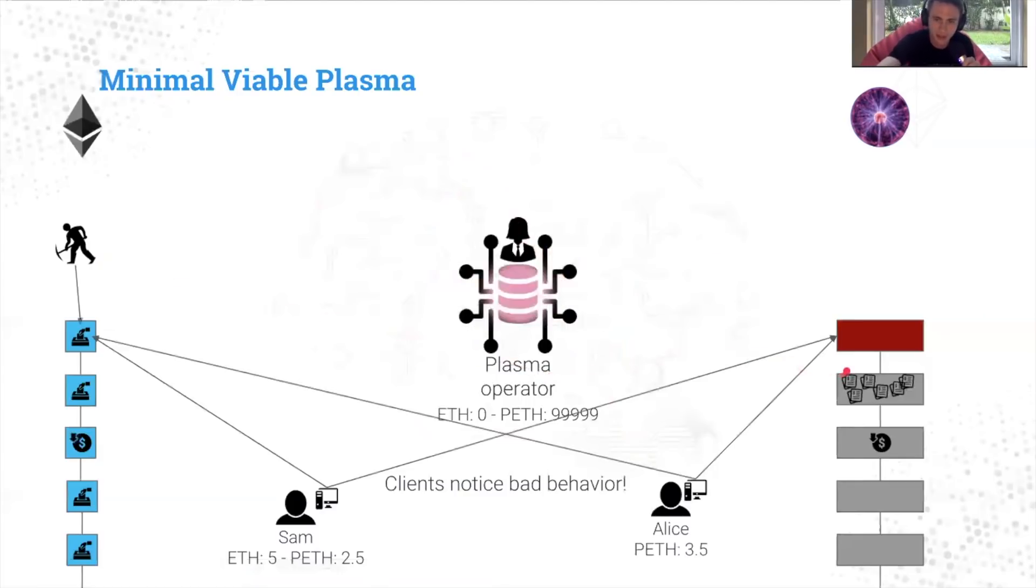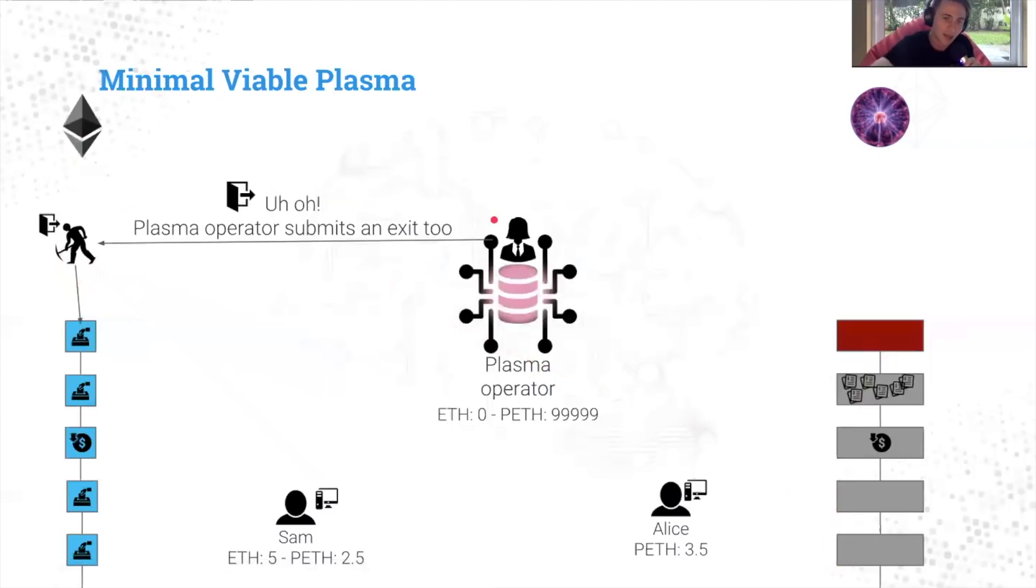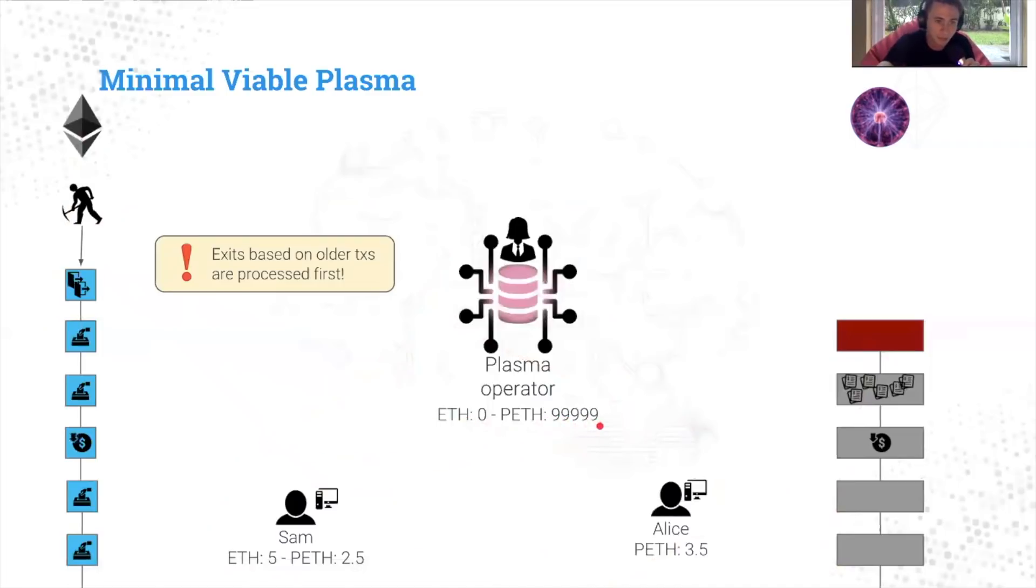So what happens? Well, those clients that were checking block validity notice the bad behavior and what are they going to do? They're going to send exit transactions. So they're going to try to get their money off of the plasma chain and back onto the root chain. The miner receives it. And then, the plasma operator is also going to submit an exit. This is not looking good for Alice and Sam, because if the plasma operator were to exit and Sam and Alice were not able to exit, then the plasma operator could just exit with all of their money, for instance. So, this is the cool thing about minimum viable plasma. So there is no checking state transitions in minimum viable plasma. Instead, it is checking transaction ordering. So we'll see what that means.